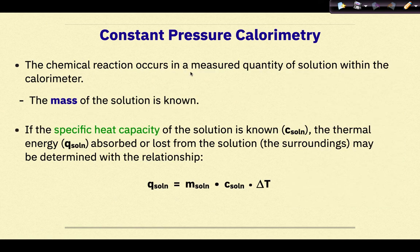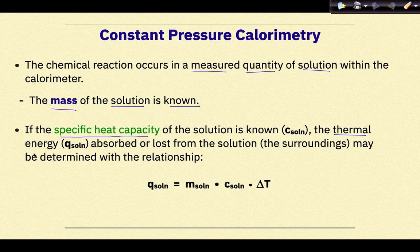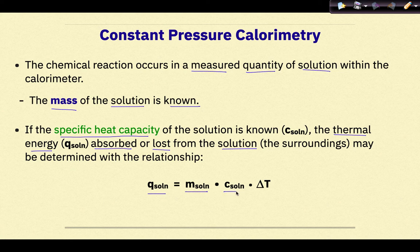The chemical reaction occurs in a measured quantity of solution within the calorimeter. The mass of the solution is known. If the specific heat capacity of the solution is known — little c solution — the thermal energy, q solution, either absorbed or lost from the solution, otherwise known as the surroundings, may be determined with the relationship q solution equals mass times c times delta T.